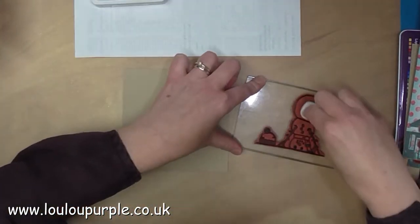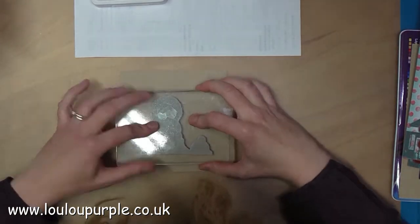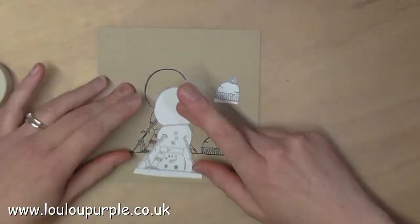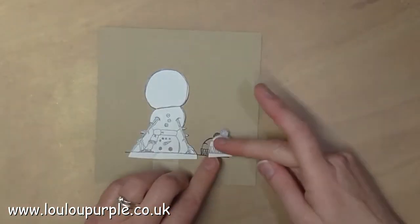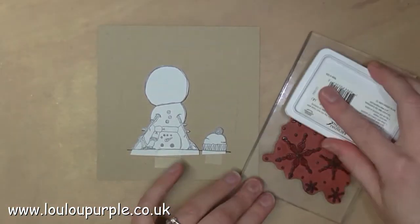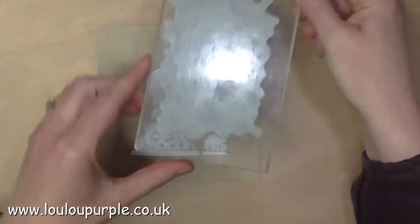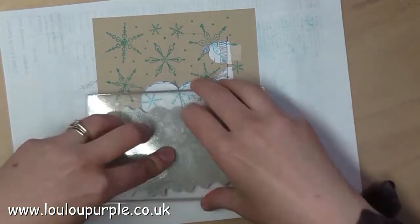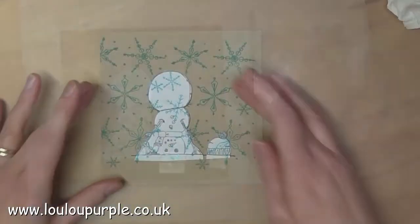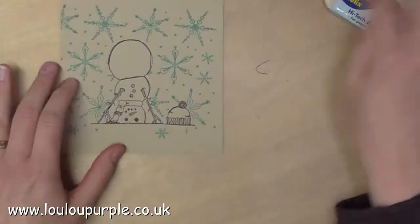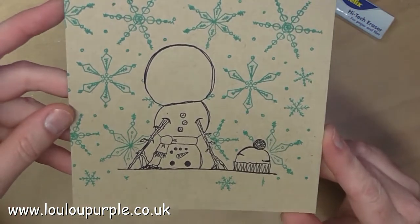I am using my black archival ink to stamp the image in the middle of the card. I am also stamping the image onto a scrap piece of paper so that I can cut it out and use it as a mask. I am just sticking the mask into place and I am going to use my snowflake stamp with my archival ink forget me not. I can now remove the mask and the image behind hasn't got any snowflakes over the top of it. I'm just rubbing out the pencil lines.